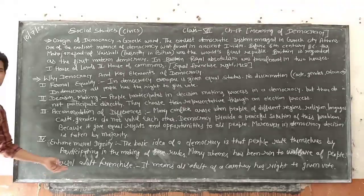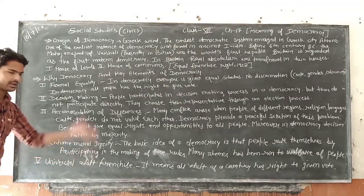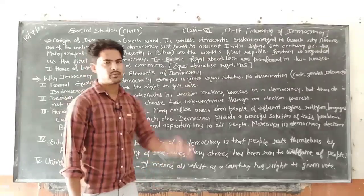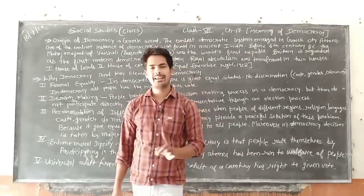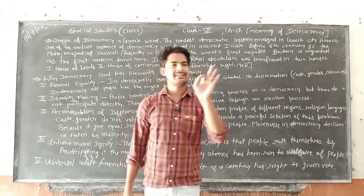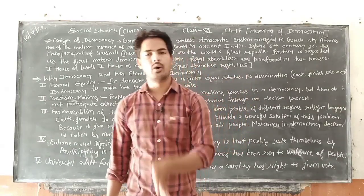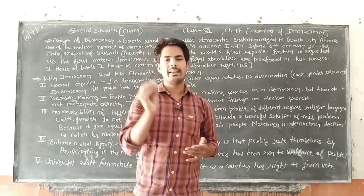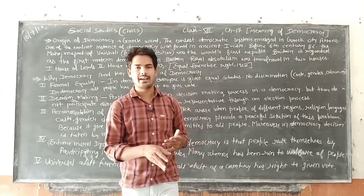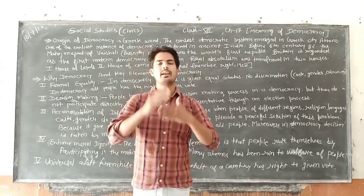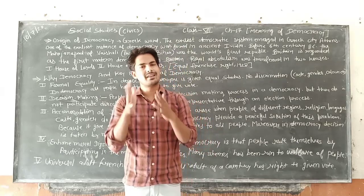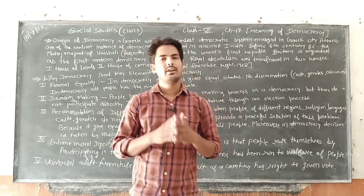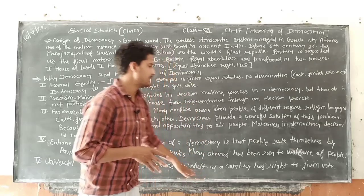The last key element is universal adult franchise. Universal adult franchise means all the people of the country who are 18 years or above have the right to give a vote. Har ek person jo 18 saal ka hai aur usse upar ka hai, uske paas vote dene ka adhikar hai — that is universal adult franchise.